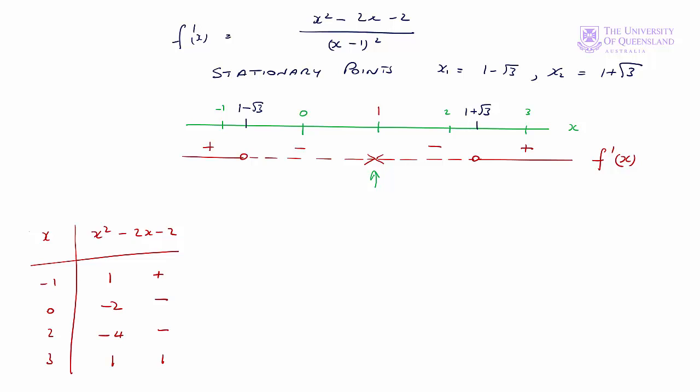Now we can consider the shape of the function at the two stationary points. At the lower stationary point, 1 minus the square root of 3, we're going from positive to negative — positive to negative, we'll have a local maximum. At 1 plus the square root of 3, we're going from negative to positive — negative to positive, we'll have a local minimum.